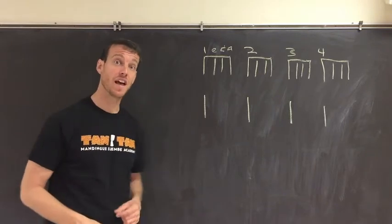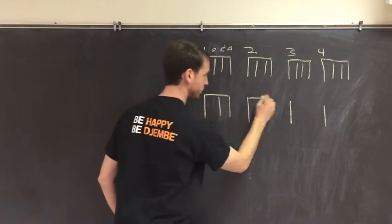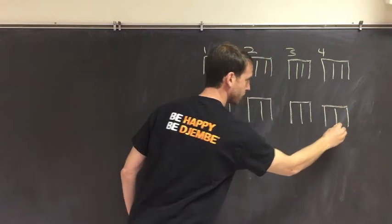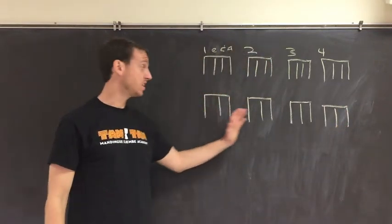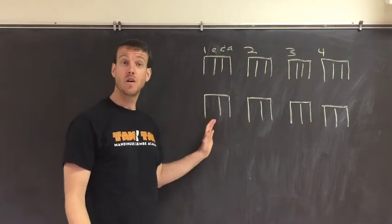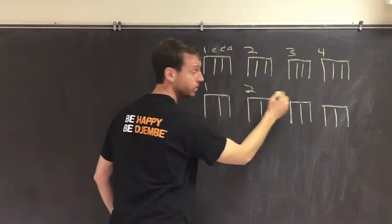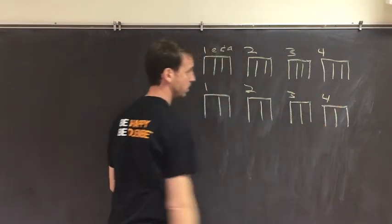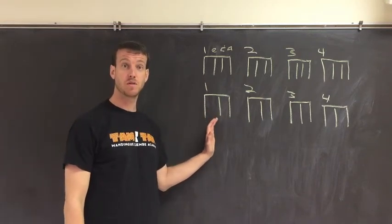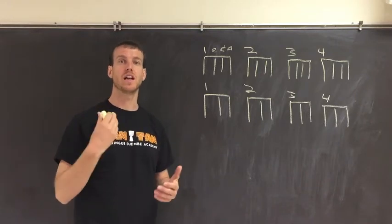So what would that look like? We would draw this. Again, in theory, each of these vertical lines would be equally spaced. So now if we write the numbers in, we would have one, two, three, four, and each downbeat is divided into three pulses.